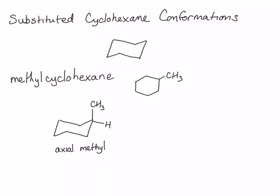If we ring flip this cyclohexane ring, the axial substituents become equatorial and vice versa. So what I'm going to do first is number my carbons so I can keep track of them in the ring-flipped version of this molecule. I'll start with my methyl group carbon as number one. When I ring flip this, the head of my chair — carbon one — will become the foot, and the foot of my chair — carbon four — will become the head. Here's my ring-flipped version with numbers to keep track of those carbons.